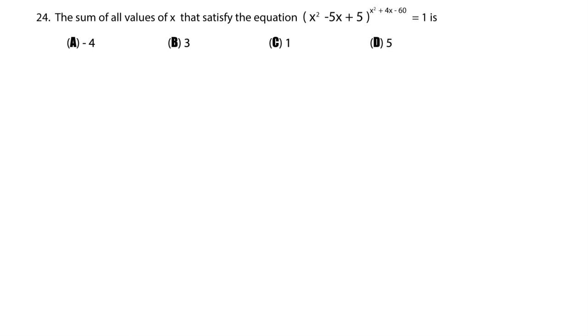The sum of all values of x that satisfy this equation is, so this equation is basically x squared minus 5x plus 5 to the power of x squared plus 4x minus 60 equals 1.